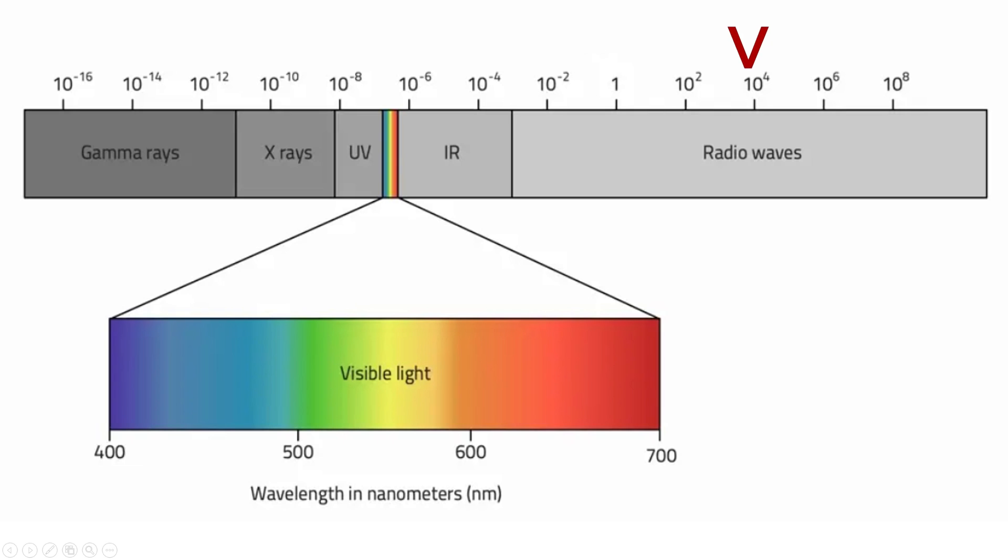The electromagnetic spectrum runs from radio waves that can have a wavelength of kilometers to gamma rays that have a wavelength much smaller than the nucleus of an atom. And even though these types of radiation behave quite differently, they all have one thing in common. They are just alternating electromagnetic fields.